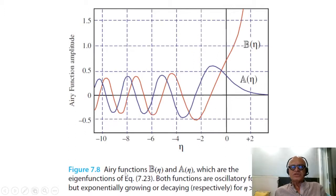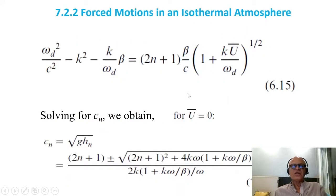So I will just jump to the solutions. Here are the functions b and a. When you have eta here becomes positive, b begins to exponentially grow with eta, which means with z. So we don't want that solution.